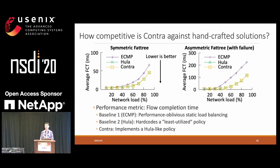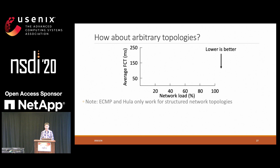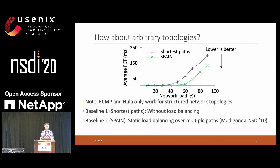We also evaluated the performance of Contra on arbitrary topologies, again using flow completion time. We cannot use the same baselines because ECMP and Hula only work for structured network topologies. So we tried shortest paths, which does no load balancing, and SPAN, which pre-computes paths and randomly selects among them at runtime — essentially a static load balancing like ECMP. Our solution, Contra, implements a least-utilized policy for this topology and outperforms both SPAN and shortest paths.